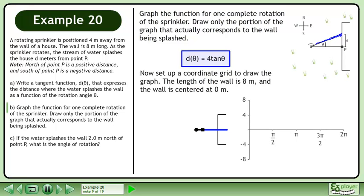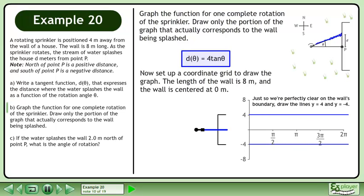Now set up a coordinate grid to draw the graph. The length of the wall is 8 meters and the wall is centered at 0 meters. Just so we're perfectly clear on the wall's boundary, draw the lines y equals 4 and y equals negative 4.